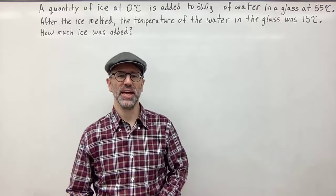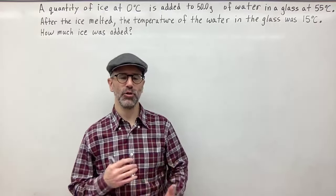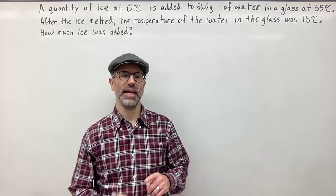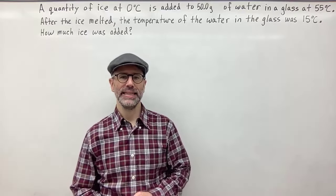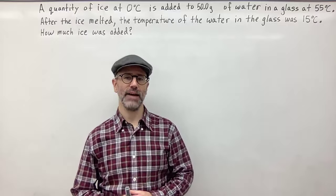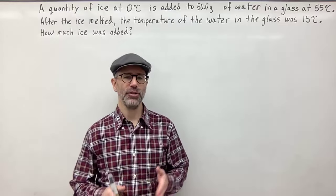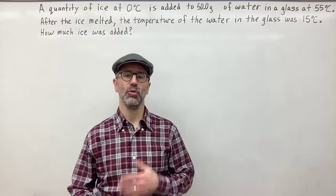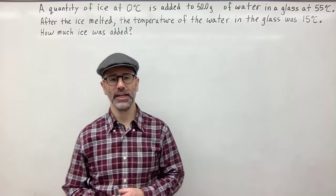Hello everyone and welcome back. My name is Mr. Cobalt and in this video I'm going to go over a calorimetry type problem. We have a quantity of ice at zero degrees Celsius added to 50.0 grams of water in a glass at 55 degrees Celsius. After the ice melted, the temperature of the water in the glass was 15 degrees Celsius. How much ice was added?